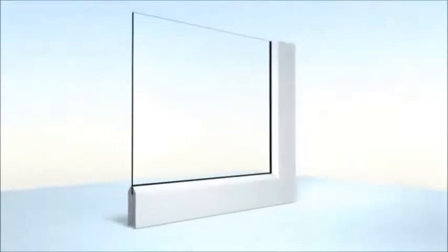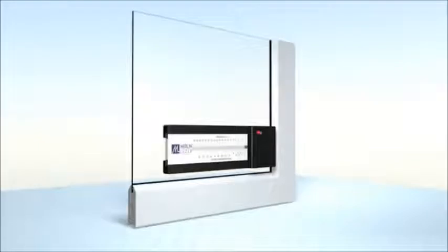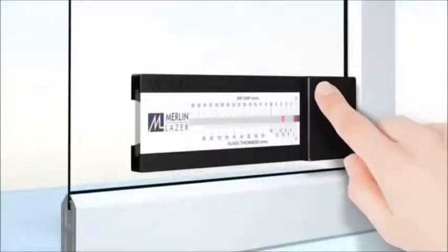When measuring a single sheet of glass, place the Merlin laser flat against the surface. Press the red button and hold it down, viewing the calibrated scale at approximately 45 degrees.